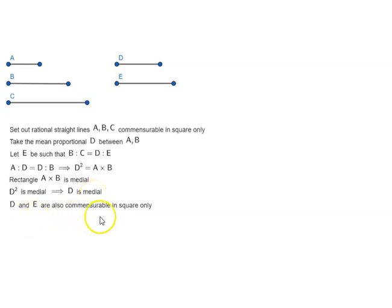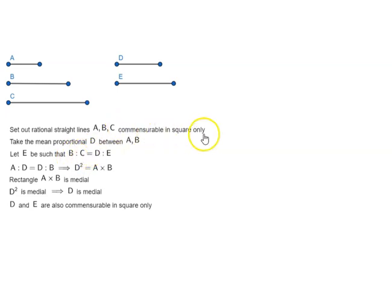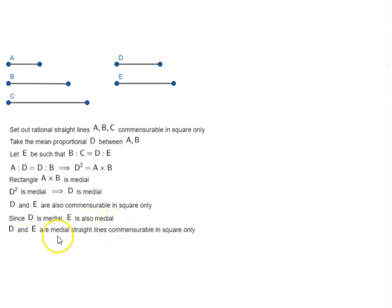D and E are commensurable in square only. Why? Because of the proportion — B is to C are commensurable in square only, so D and E will also be commensurable in square only. And since D is medial, E is also medial. So D and E are medial straight lines commensurable in square only.